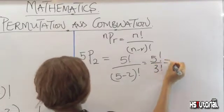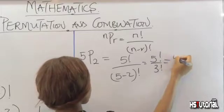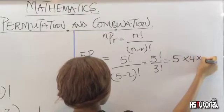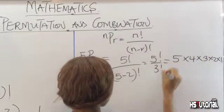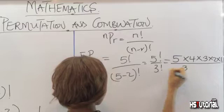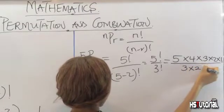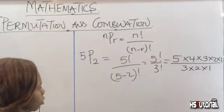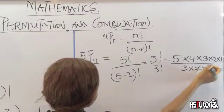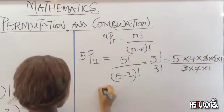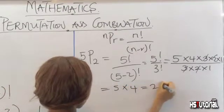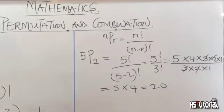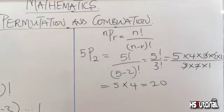5 factorial is 5 times 4 times 3 times 2 times 1, all over 3 times 2 times 1. The 3 times 2 times 1 cancels, and we are left with 5 times 4, which equals 20. So 5 permutation 2 gives us 20.